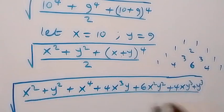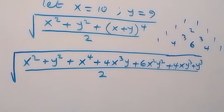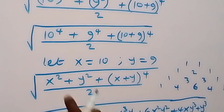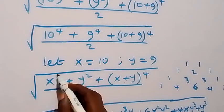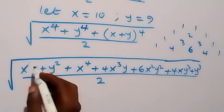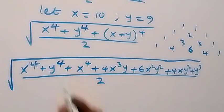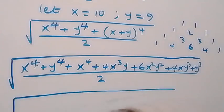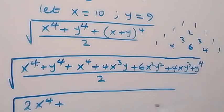From here when we look at this — please there is a mistake here, this shouldn't be x squared, this is to power 4. So we have x raised to power 4 here. Thank you. From here we now have x raised to power 4 plus x raised to power 4, so we can collect the like terms and this gives us 2x raised to power 4, plus y raised to power 4 — and also this is y raised to power 4 — so 2y raised to power 4.